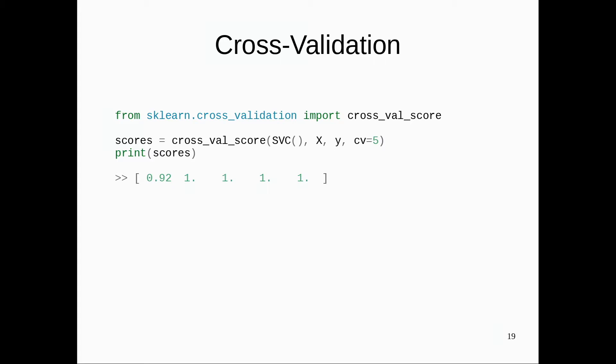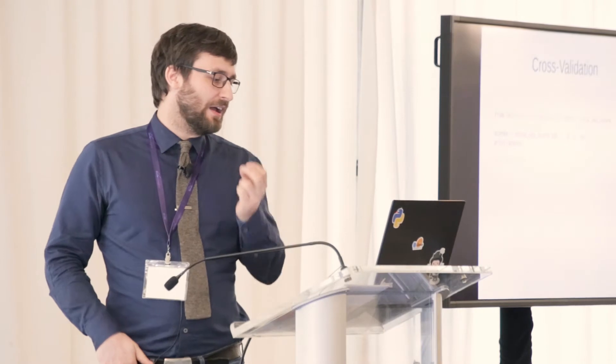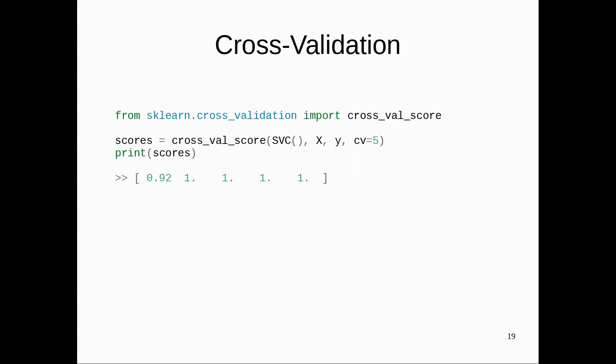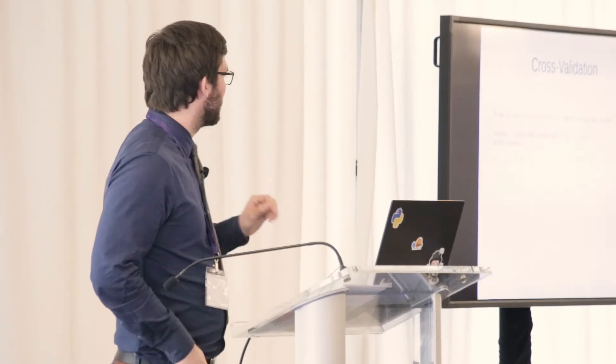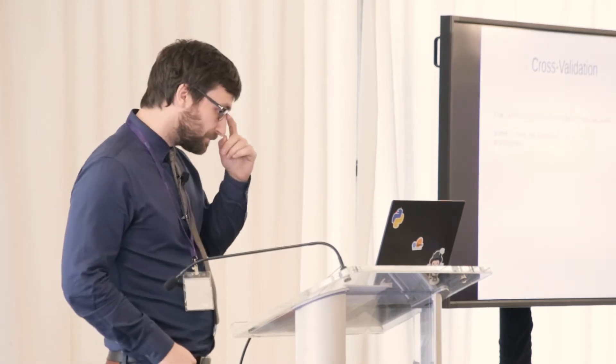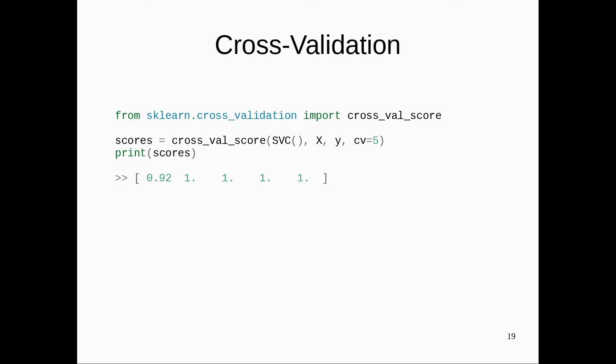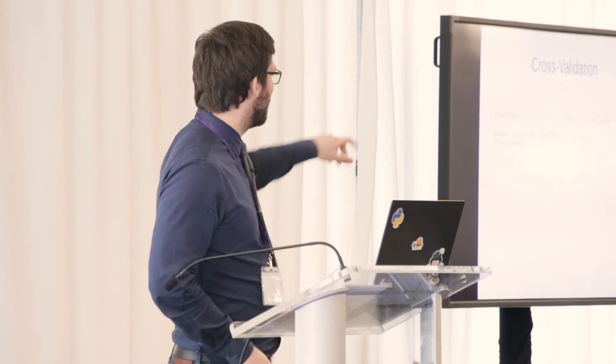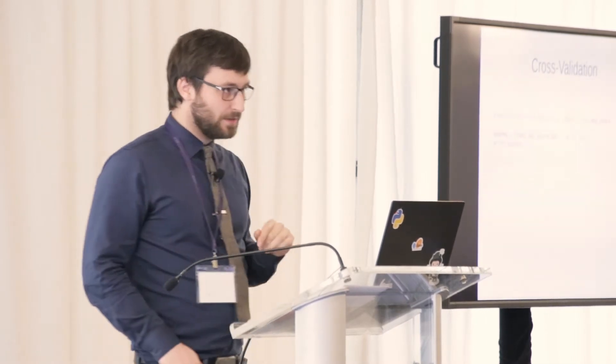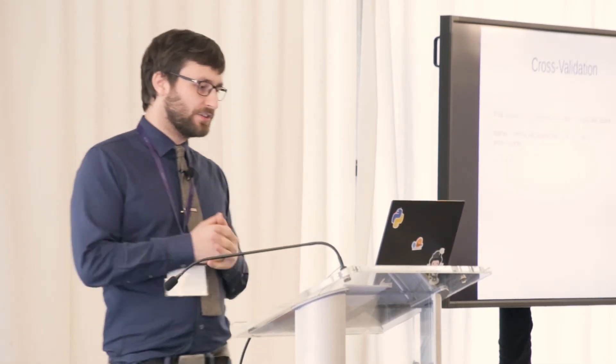Cross_val_score gets an object, the data, and the labels. To tell it how much cross-validation you want to do — by default it does threefold stratified cross-validation; here I say I want fivefold stratified cross-validation. This returns the scores on the holdout set for each iteration, so you get five scores for the five splits of the data. Then you can compute the mean and standard deviation.